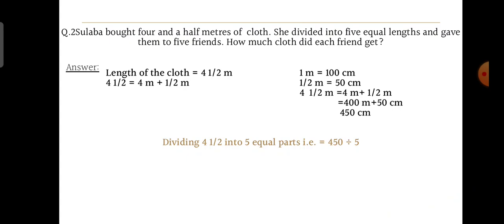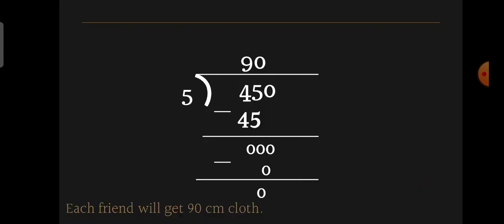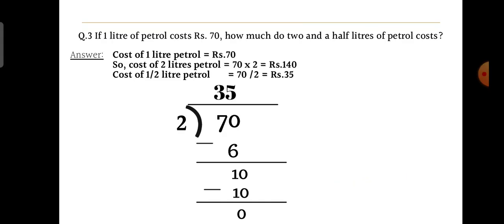Now divide 450 centimeters among five friends. Dividing 450 by 5: 45 ÷ 5 = 9, bring down the zero, 0 ÷ 5 = 0, giving us 90. So each friend will get 90 centimeters of cloth.